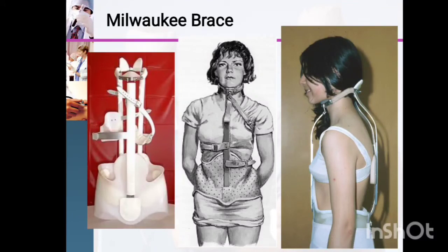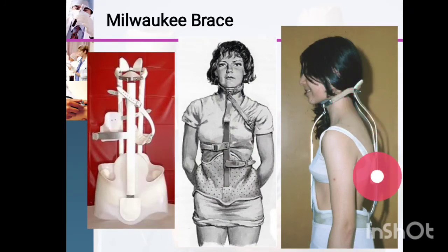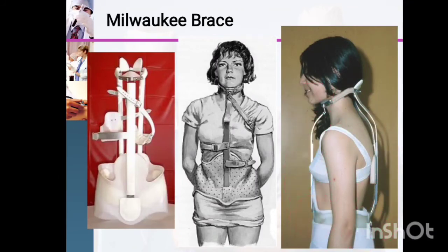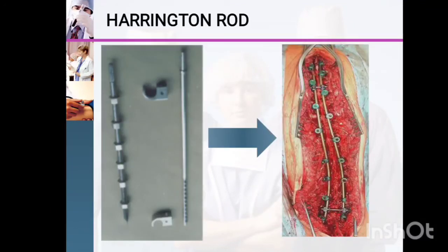There are many bracing options nowadays. Two examples are the Milwaukee brace and the Boston brace. The Milwaukee brace has long straight parts in the back and front, while the Boston brace does not have these extensions.